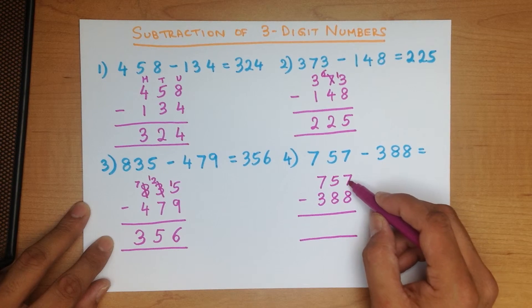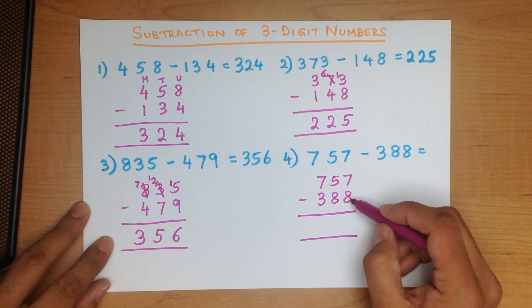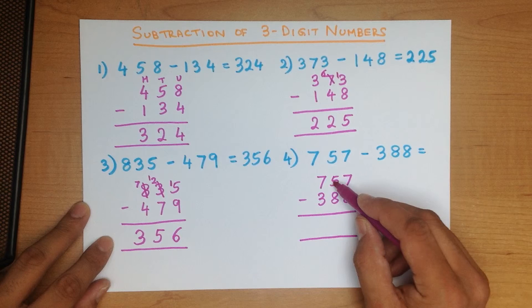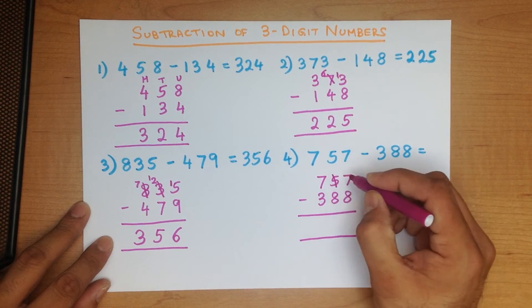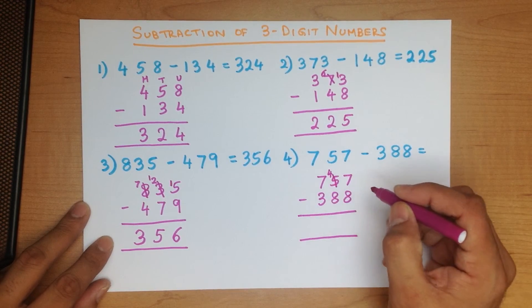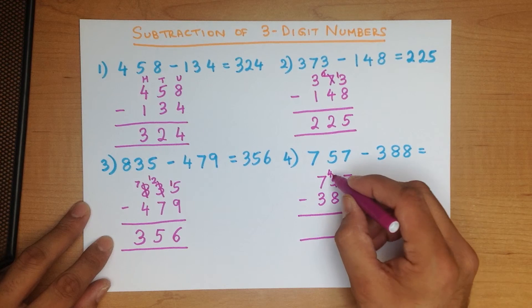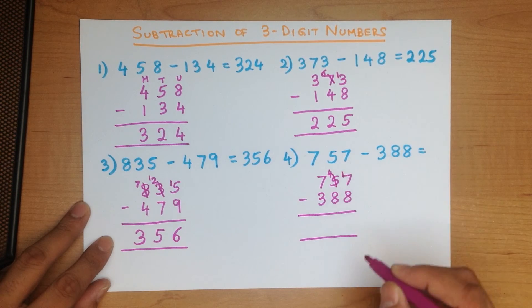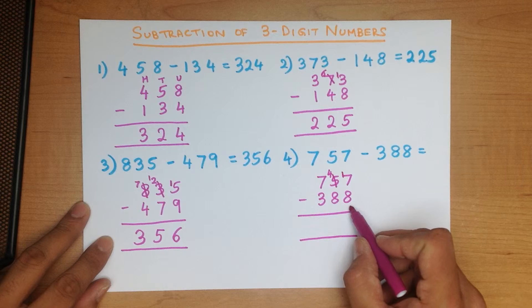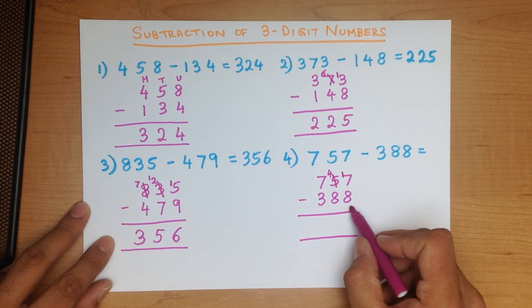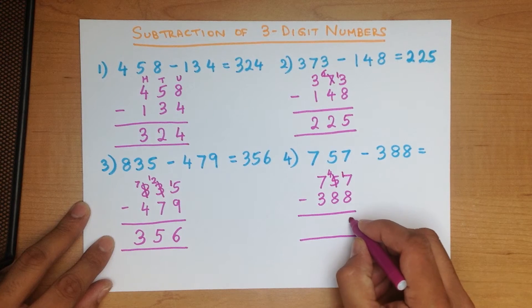We know 7 is smaller than 8, so we have to take 1 from the tens column. We cross out 5 and put in 4, and the 1 we have taken we put over here. This has now become 17 minus 8, which is 9.